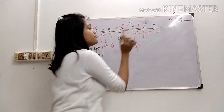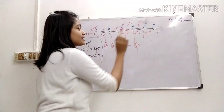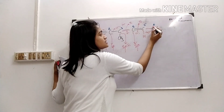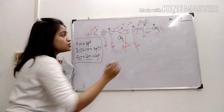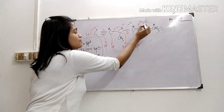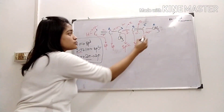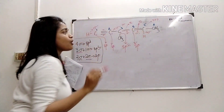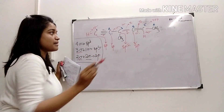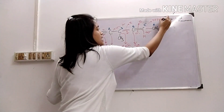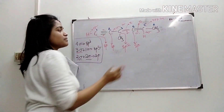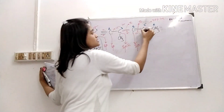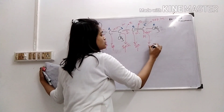The fifth carbon has one sigma bond already formed with the fourth carbon, a second sigma bond with hydrogen, and another sigma bond with the sixth methyl carbon — giving three sigma bonds. It also forms one pi bond with the fourth carbon. So three sigma and one pi means the fifth carbon is sp2 hybridized.